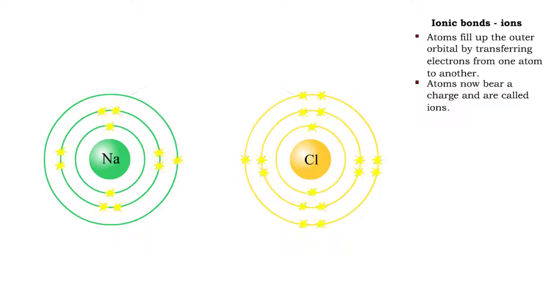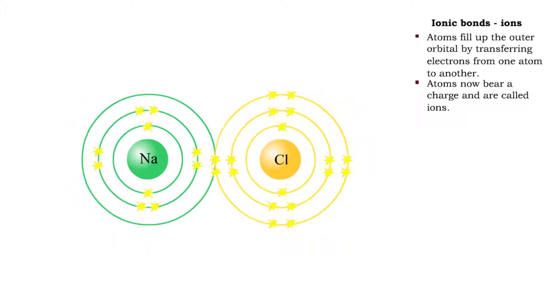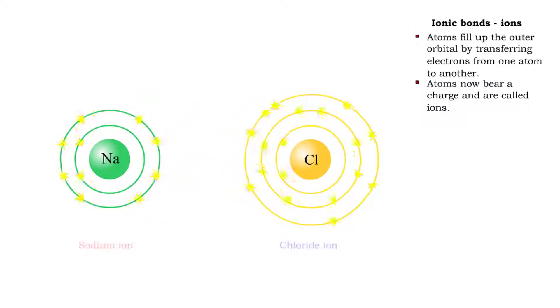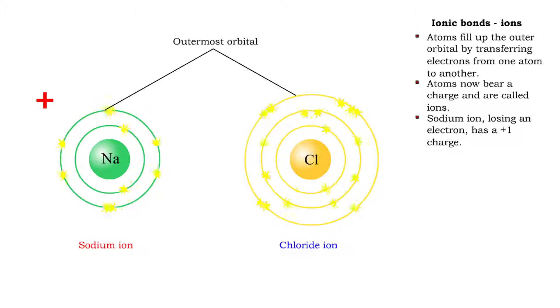After the electron is transferred, each original atom has changed its charge and is now called an ion. The sodium ion, having lost an electron, now has a positive 1 charge. The chloride ion, having gained an electron, now has a negative 1 charge.